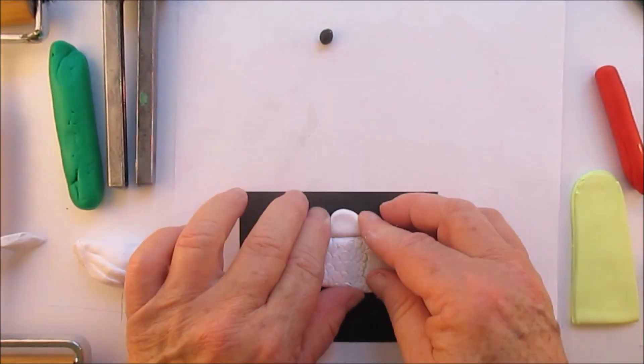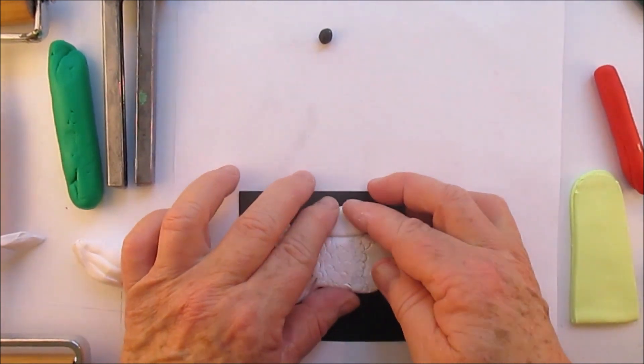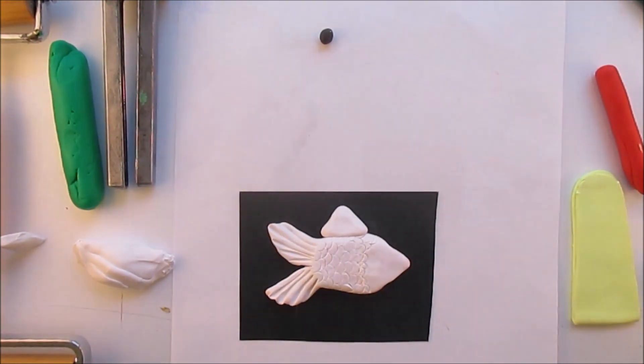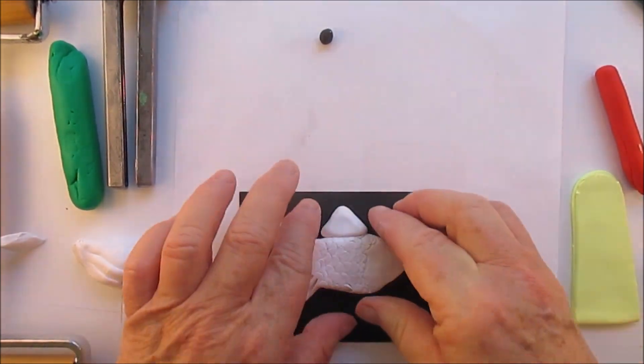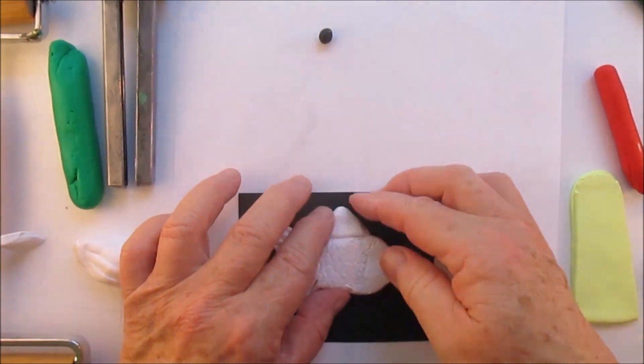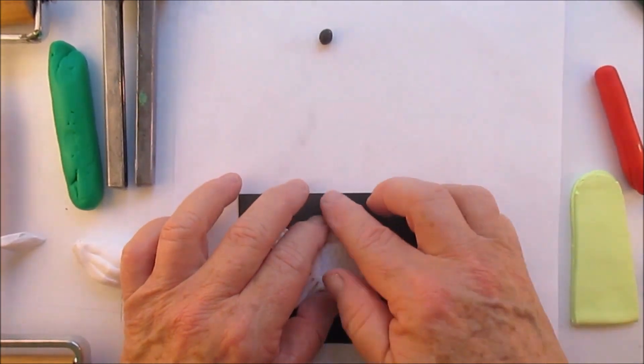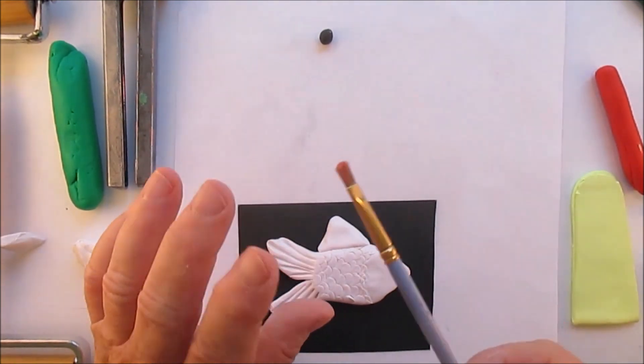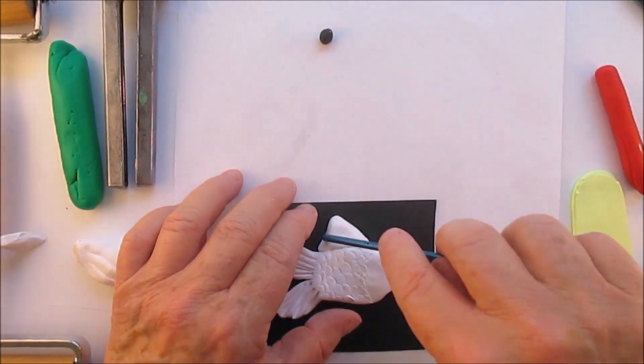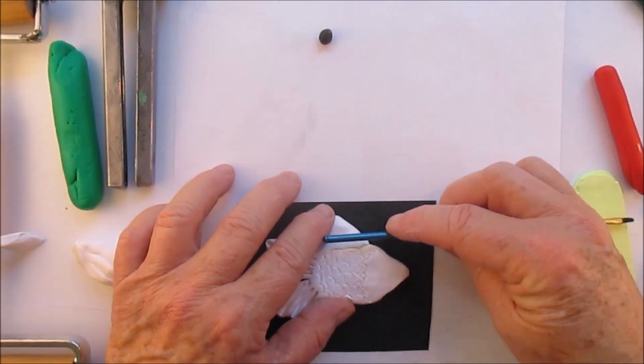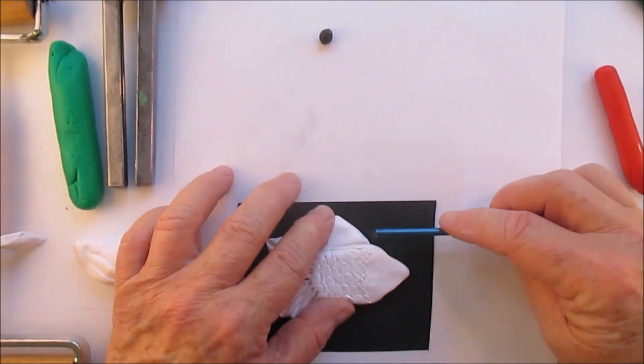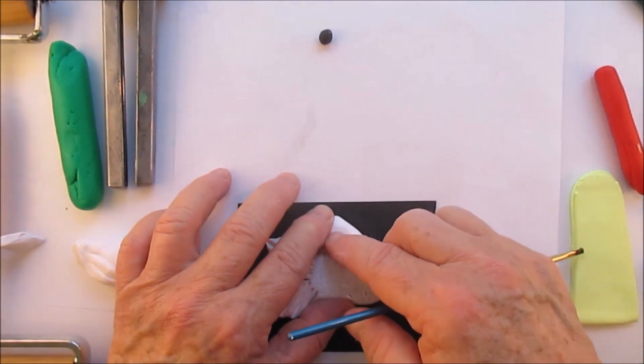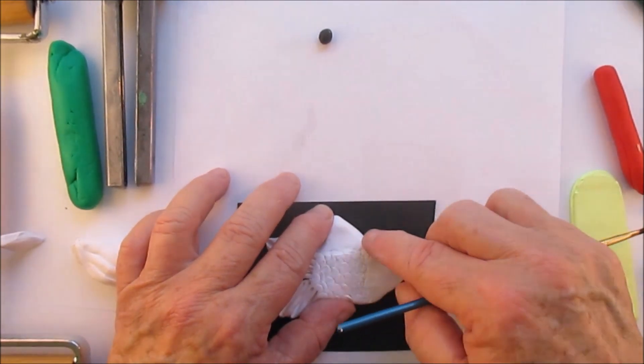Now we're going to do a fin and just blend it into the body. I just use the end of the paintbrush to blend it in. You don't need fancy tools. I guess you've figured that out already, that I do not use fancy tools.